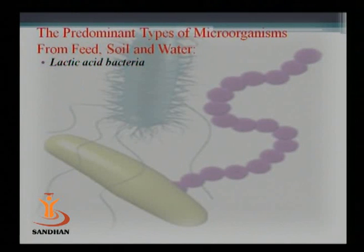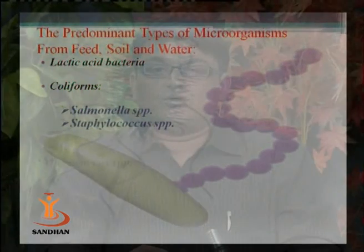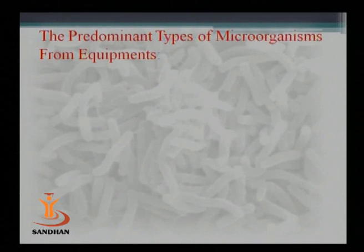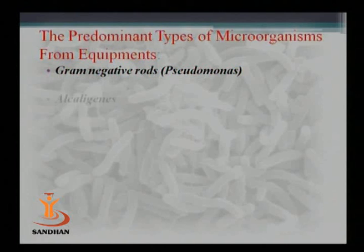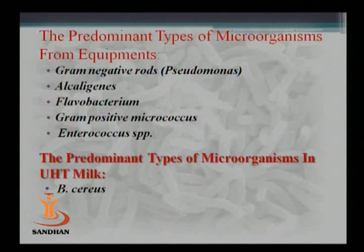The predominant types of microorganisms from feed, soil, and water include lactic acid bacteria, coliforms, Salmonella group, Staphylococcus, and Micrococcus luteus species. Organisms from equipment used by milking persons include gram-negative rods such as Pseudomonas, Alcaligenes, Flavobacterium, gram-positive Micrococcus, and Enterobacteria species. So many different types of species can cause contamination, coming from the equipment.